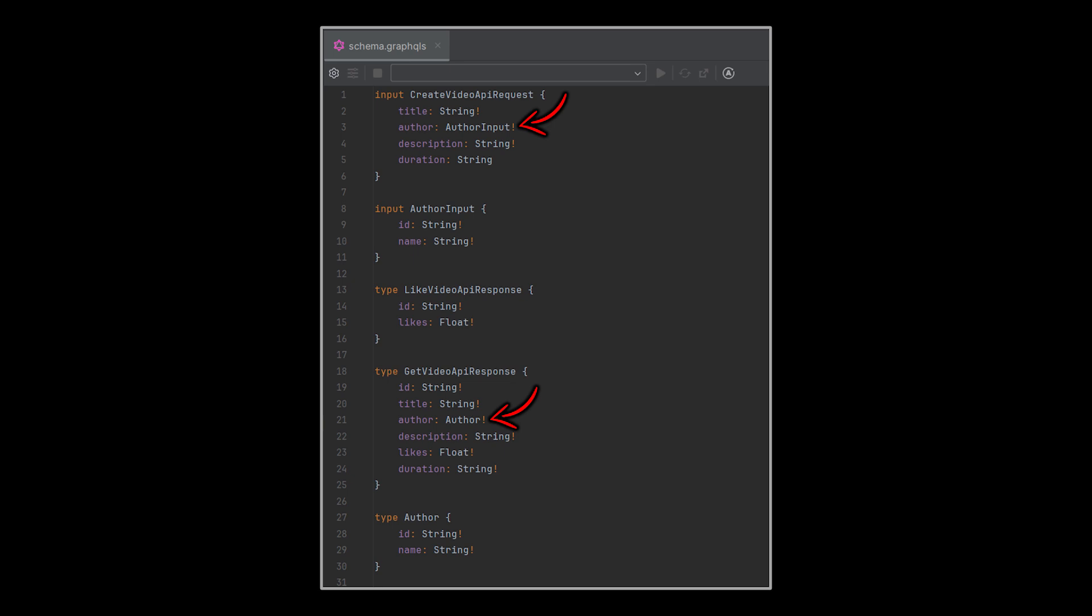Okay, let's take a look at one more advantage of GraphQL. To do that, we'll modify the author in our GraphQL schema from a string to a complex object. We will not modify the Java object responses and requests, just the schema.